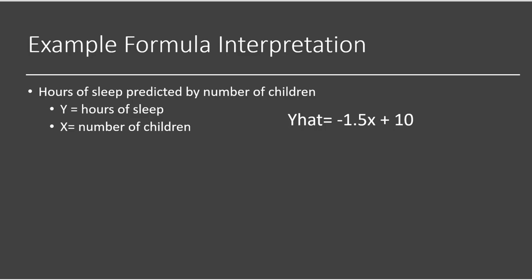The slope is the most important number to interpret. For each child that you have, how many hours of sleep will you lose? For each additional child, you lose 1.5 hours of sleep. If you have two children, you lose three hours; with three children, 4.5 hours. That slope is really about how your x variable impacts the y variable prediction. If sleep really matters to you and you're debating having another child, you might think — that's another hour and a half less sleep.